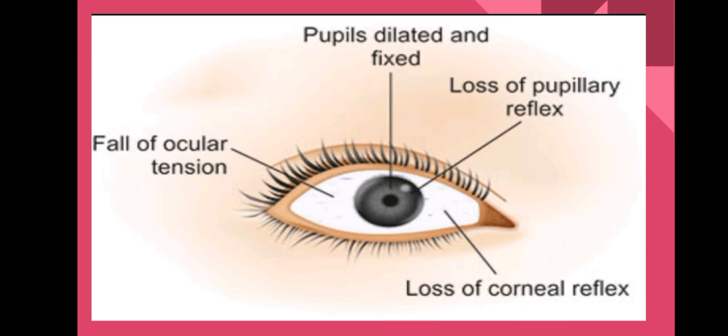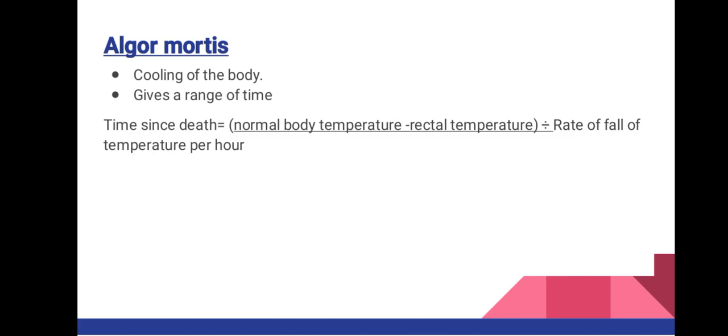This image shows the changes that occur in the eye after death that can be used to calculate post-mortem interval — including the fall of ocular tension, pupils becoming dilated and fixed, loss of pupillary reflex, and loss of corneal reflex.